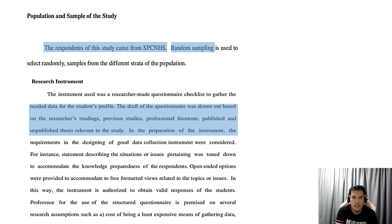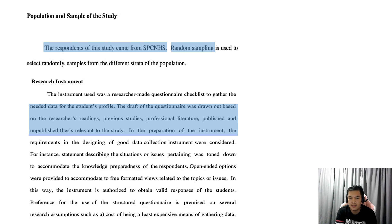On the population and sample of the study, the respondents of the study came from the SPC and HS, and random sampling was used that selects randomly. This means there are only samples from different strata of the population — not the whole student body of SPC and HS was being surveyed, but only a part of it.